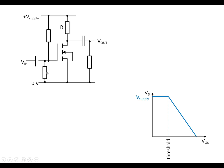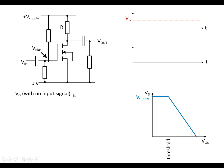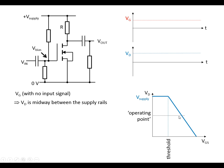The first form of bias is to set the gate voltage using a voltage divider. The bias voltage is set so that the MOSFET is always conducting. With no input signal, the gate is at the bias voltage. We set it so that the voltage at the drain is midway between the supply rails — somewhere in the middle of the characteristic curve — so that as Vin goes up and Vout goes down, we can get a large amplitude change in Vout. We call this the operating point.